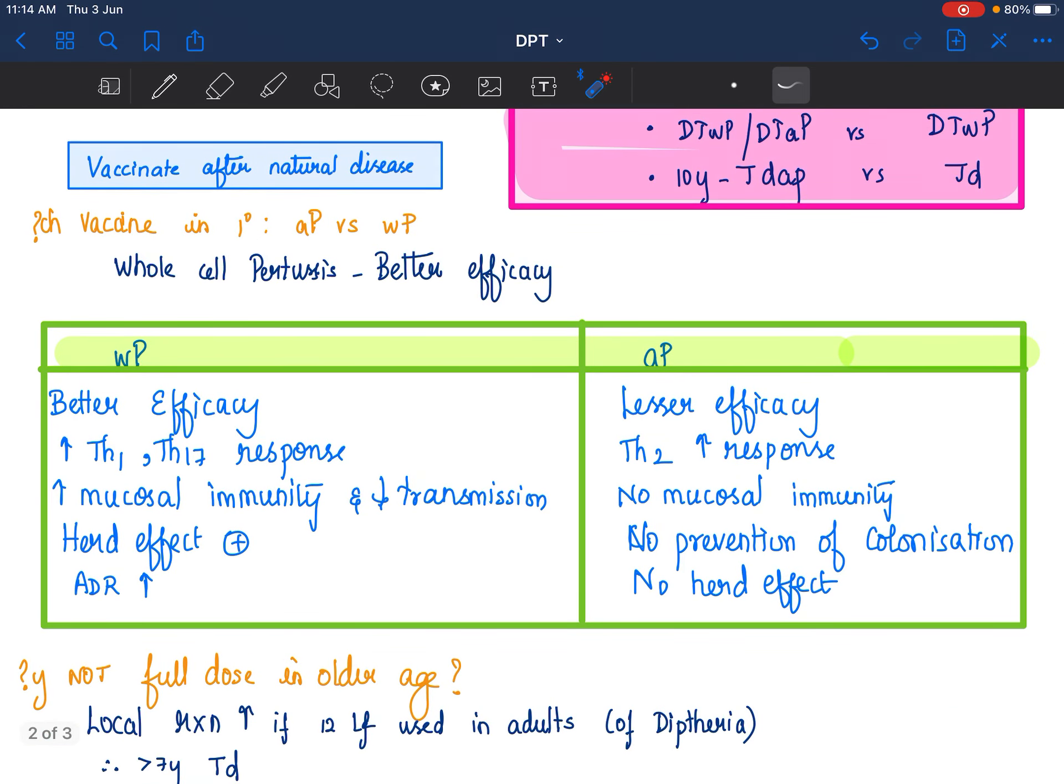Which vaccine in primary series is preferred if somebody is going to ask you, it is always whole cell pertussis because it provides a better efficacy.